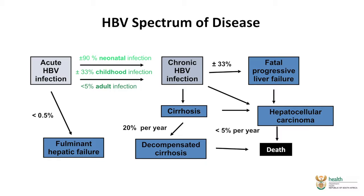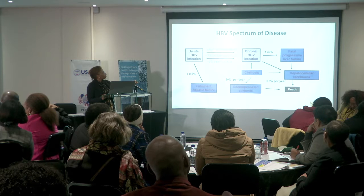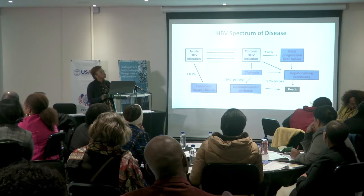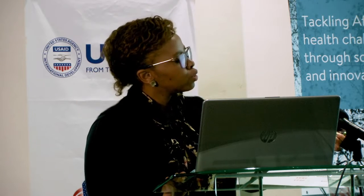A patient can come in acutely hepatitis B infected. Less than 0.5% of them would develop necrotic features in their liver and would be termed as having fulminant hepatic failure. Out of the acute cases, about 90% of your neonates would progress to chronic hepatitis B infection, 33% of childhood infections would progress, and less than 5% of your adult infected patients would progress to chronic hepatitis.